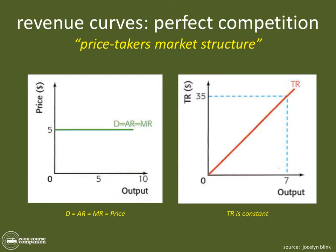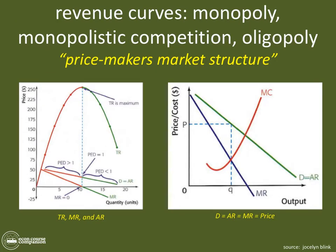If there are terms you don't understand — like average revenue or marginal revenue — go to the previous video and check out the key terms for revenues. Now let's look at what happens in the price makers market structure. This is a little more intimidating at first, covering monopoly, monopolistic competition, and oligopoly, where firms can set their own price.